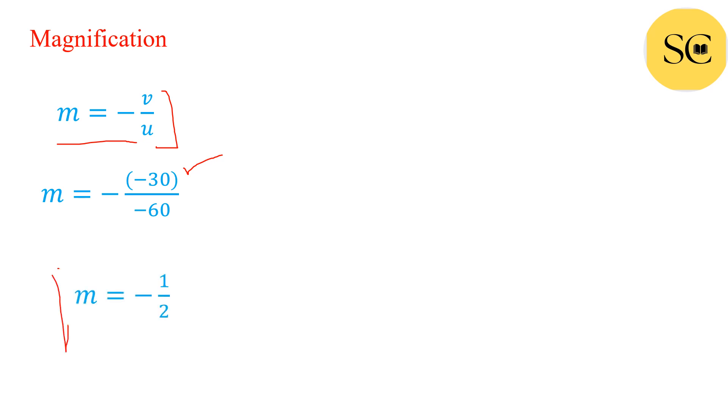Now after dividing we will get minus 1 upon 2. This is magnification. It has no unit. Image is half in size of the object.